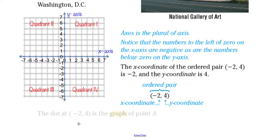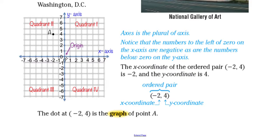Let's find this dot right here — this is point A. The dot at negative two, four is the graph of point A. Negative two is the x-coordinate; we start from the origin. By the way, this is the origin right here, at zero, zero. So by reading the x-coordinate first from the origin — negative two — and then going up four units to point A, that's how you read point A.